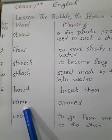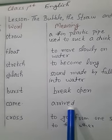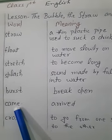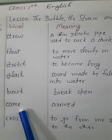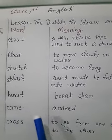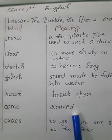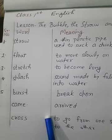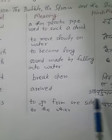Number six is 'came.' C-A-M-E. Came means arrived. Came ka matlab aana hota hai — jab aap kahin jaate hain to 'go' hota hai, aur aana ke liye 'came' lagate hain. Came is the second form of 'come.' Arrived means aa pahunchna.